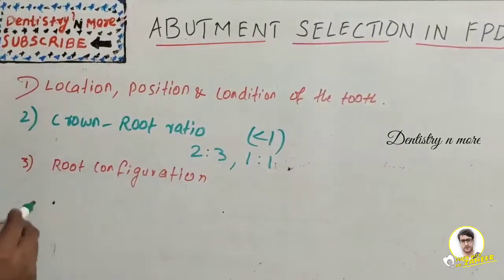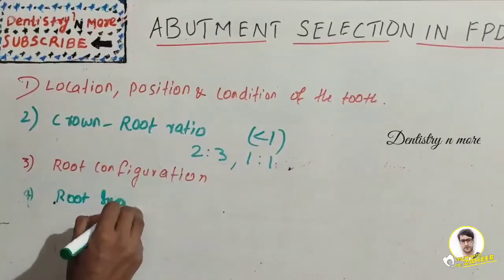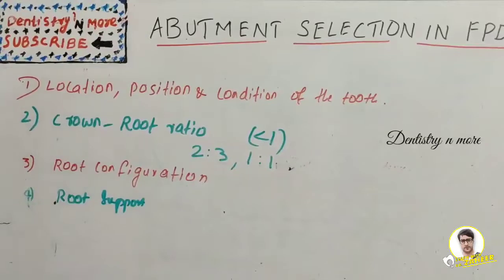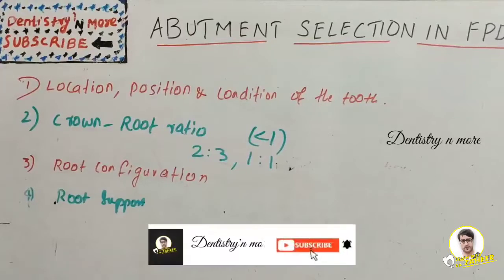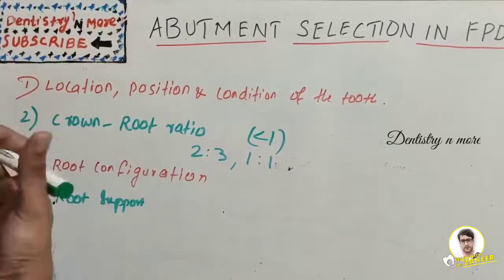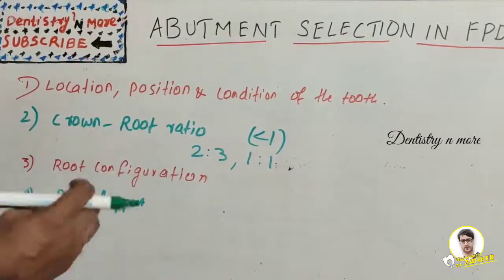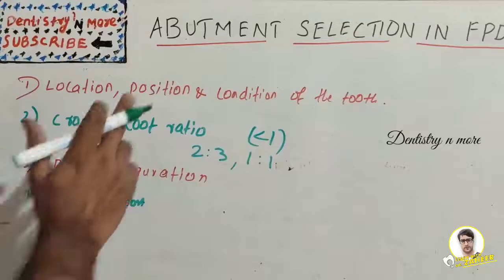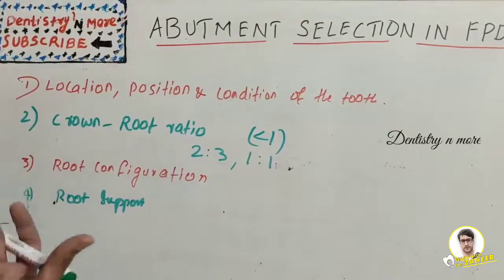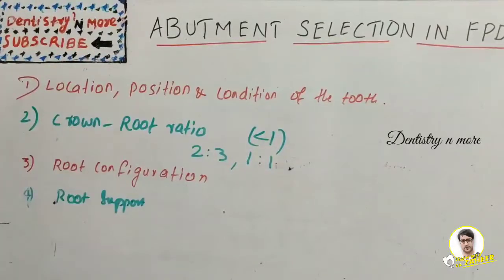The fourth one is root support. The supporting alveolar bone should be healthy without any periapical or periodontal problems. It should have good trabecular architecture and should not show any sign of bone defects or bone loss. The IOPA should be used to evaluate the bone architecture before planning it as an abutment. Alveolar bone support is one of the most important factors that aid in evaluating an abutment.